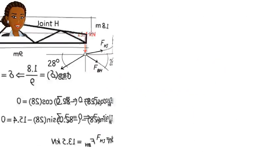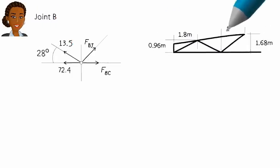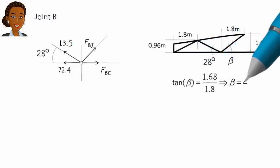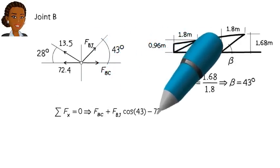Now we can draw this free body diagram for joint B. Then we write the equilibrium equations and solve them for the two unknown forces, like this.